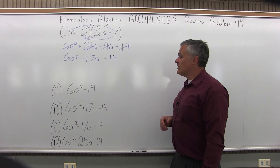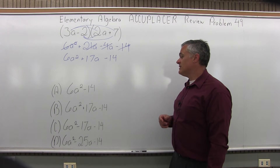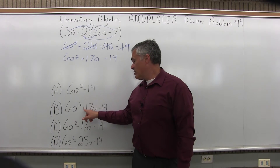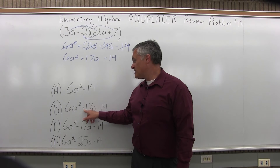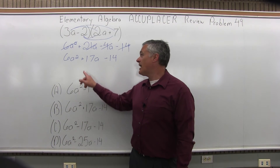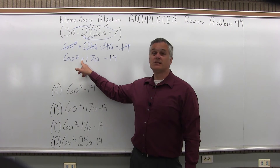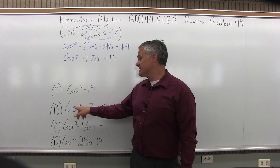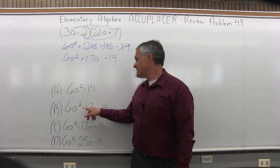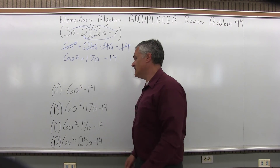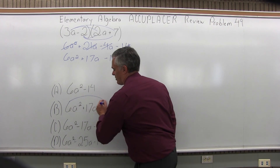Looking at the answer choices, options B and C look very similar. They both have a 17a, but in option B it's positive and in option C it's negative. Since my answer has a positive 17a, we have a match with option B: 6a squared plus 17a minus 14. B is the answer for this problem.